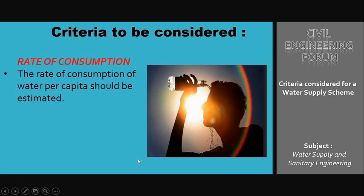The next criteria is the rate of consumption. The rate of consumption of water per capita should be estimated. The demand of water depends on various uses such as domestic, public, industrial, etc. This rate of consumption per capita should be decided by carefully considering all possible uses. When multiplied with the population, it gives the total quantity of water required for the water supply scheme.